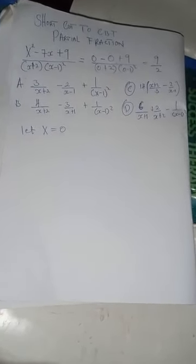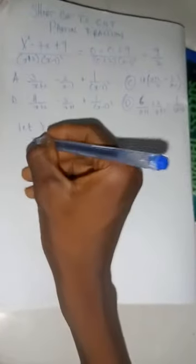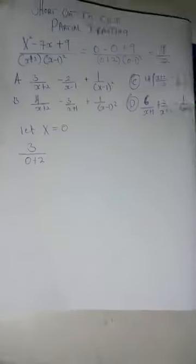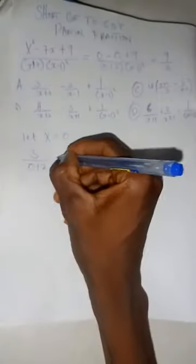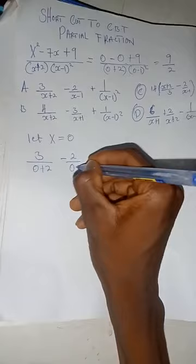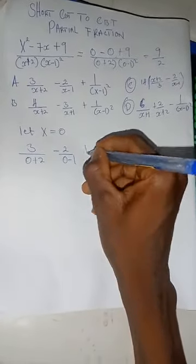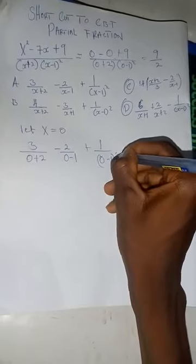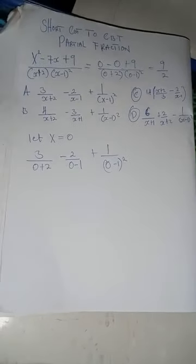Now let's move down to the options. We have three over X plus two in option A. We have three over zero plus two, minus two over zero minus one, plus one over zero minus one all squared.